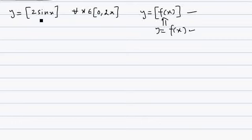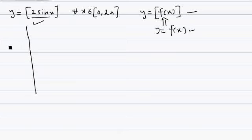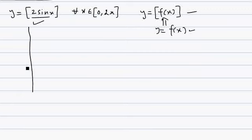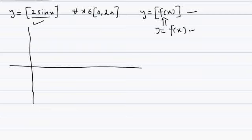The first step is to draw the graph of f(x), that is 2sin(x). The graph of 2sin(x) will vary between 2 and minus 2, and the period is 2π.